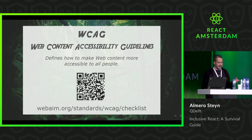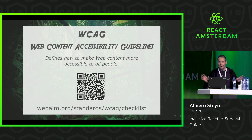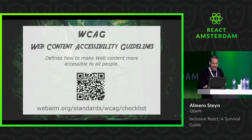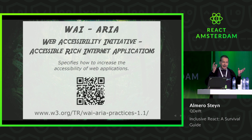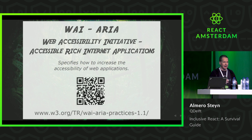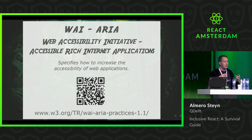WCAG is a W3C specification that tells you how to make web content more accessible to all people. It's quite a technical document with a lot of information, so maybe start with a checklist that presents on one page what the WCAG points are before diving into the document itself. Another term: WAI-ARIA — Web Accessibility Initiative, Accessible Rich Internet Applications. Just another W3C specification telling us how to make web applications more accessible, particularly the interactive elements we create with JavaScript and React, like tab controls and drop-down menus.